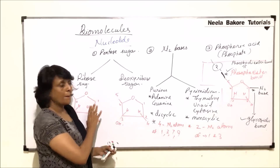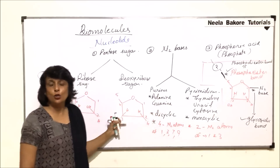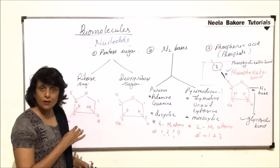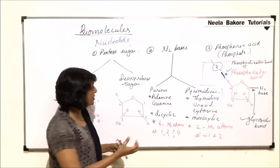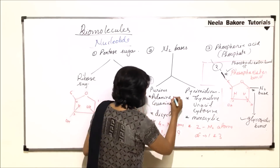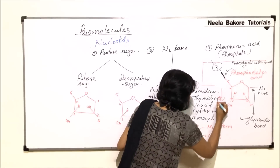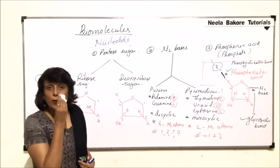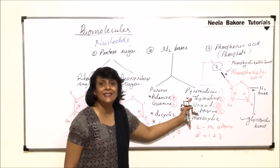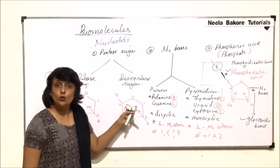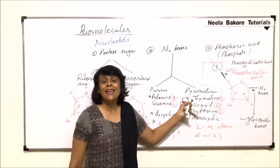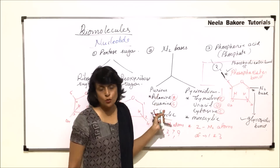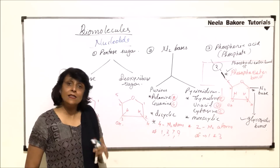So a nucleotide is formed from three things: pentose sugar, nitrogen base, and phosphoric acid. The sugar can be ribose or deoxyribose — RNA has ribose sugar, DNA has deoxyribose sugar. Nitrogen bases fall into two categories: purines (adenine A and guanine G) and pyrimidines. DNA has thymine (T) and cytosine (C) as its pyrimidines, whereas RNA has uracil (U) and cytosine (C). The key difference is DNA has T while RNA has U.